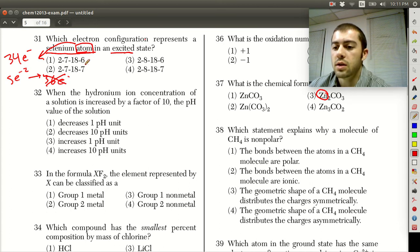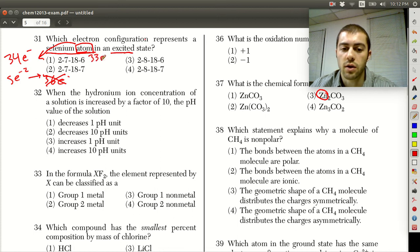Looking at these answer choices, the first thing we could do is count up the number of electrons. So 2, 18, 7, and 6, that would give us 33 electrons.